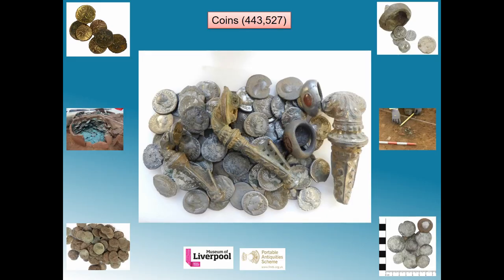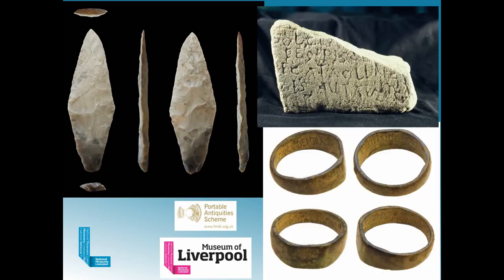Briefly looking at object types — the majority of objects on the database are coins. Objects which are not metal, such as early medieval sculpture and flint daggers, or more modern objects like trench art — a ring made from a coin from the Second World War — are not picked up by metal detecting. So there's a difference where coins and metalwork will naturally be more plentiful than other objects.